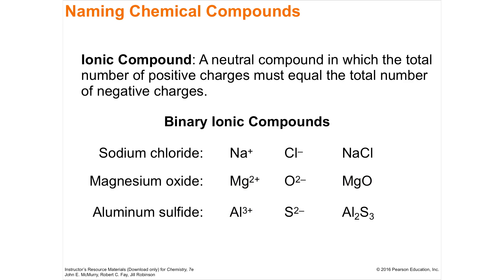Aluminum is in group three, so it's just named aluminum. Sulfur is in group six and changes to sulfide. Because aluminum is +3 and sulfide is -2, you need subscripts to balance: Al₂S₃, since three times two equals six and two times three equals six. With ionic bonds, you ignore the subscripts when naming — you just say aluminum sulfide.